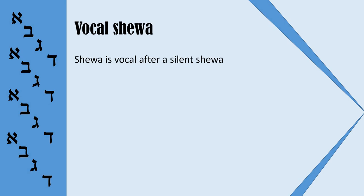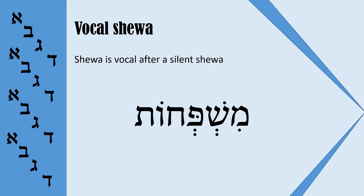Finally, Sheva is vocal after a silent Sheva. When we have two Shevas going together, the first one is usually silent and the second one is vocal. But this rule works only when two Shevas occur in the middle of the word. In the word Mishpehot, the first Sheva is silent because it is preceded by Chirek, which is a short vowel, and the second Sheva is vocal.